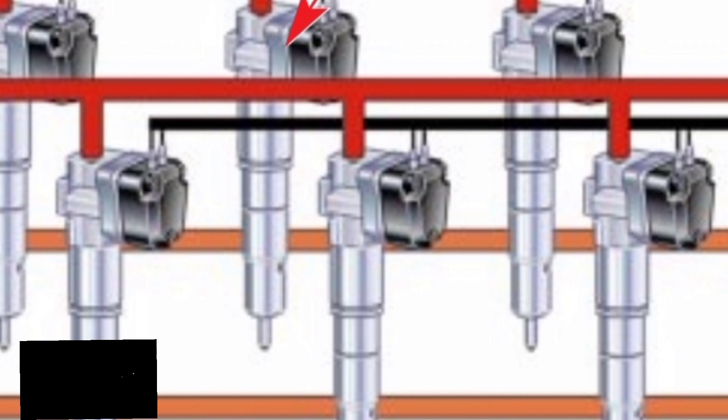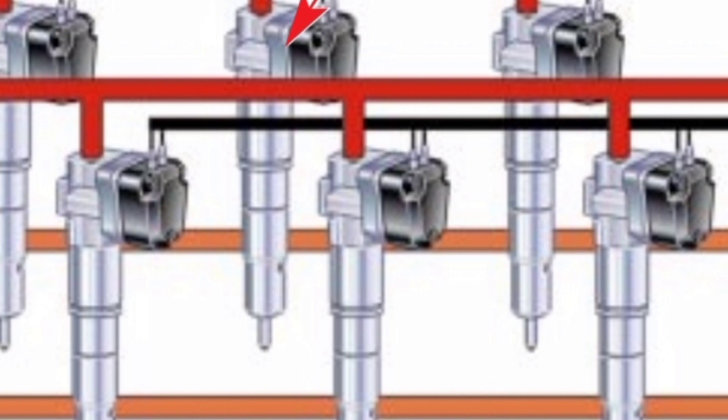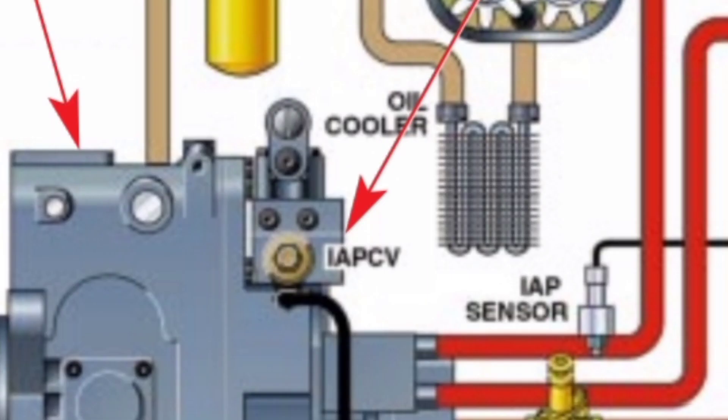The high pressure oil is called the injection actuation pressure. The HEUI operates in the same way as a hydraulic cylinder in order to multiply the force of the high pressure oil. This multiplication of pressure is achieved by applying the force of the high pressure oil to a piston that is larger than the plunger by approximately six times. The piston powered by high pressure engine lubrication oil pushes on the plunger, generating injection pressure that is greater than the actuation pressure of the oil by approximately six times.